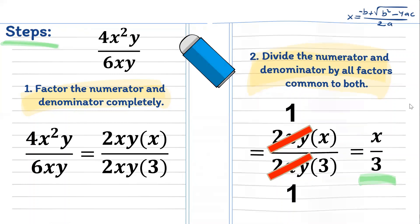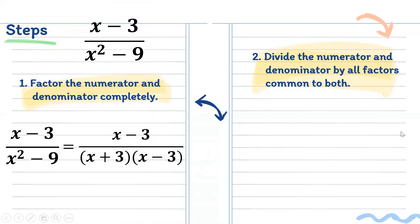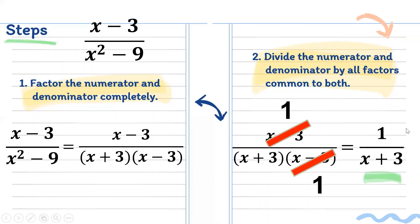Let's have another example: x minus 3 all over x squared minus 9. Factor the numerator and denominator. The numerator is x minus 3. The denominator factors as the quantity x plus 3 times the quantity x minus 3. The common factor is x minus 3, so we cancel it out, leaving 1 over x plus 3. So the simplified form of x minus 3 all over x squared minus 9 is 1 all over x plus 3.